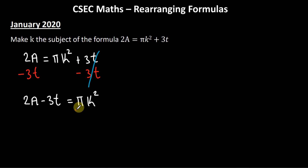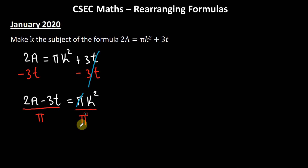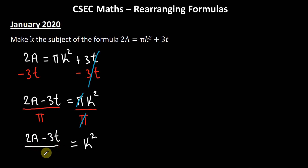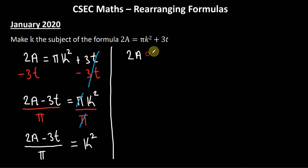Next, I'm multiplying k² by π, so I'll divide both sides by π. π cancels π, leaving me with k² = (2a − 3t)/π. Let me rewrite that: (2a − 3t)/π = k².